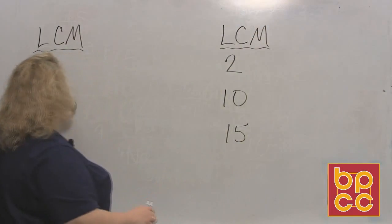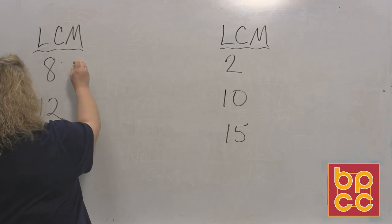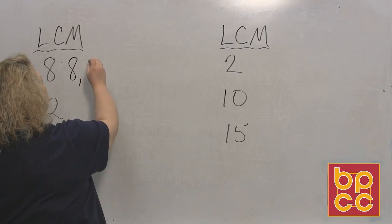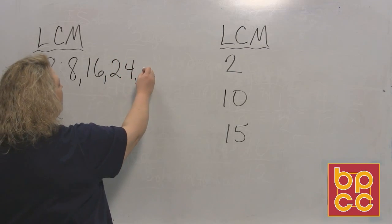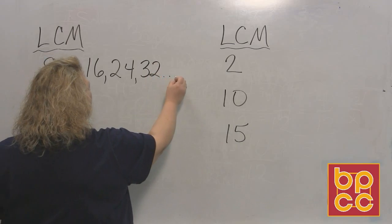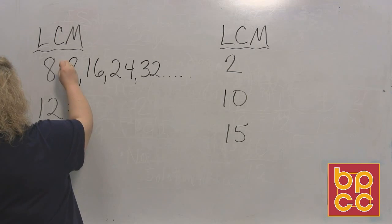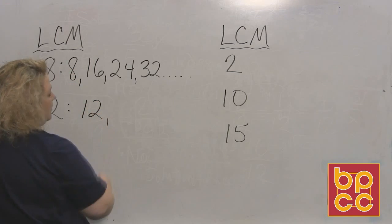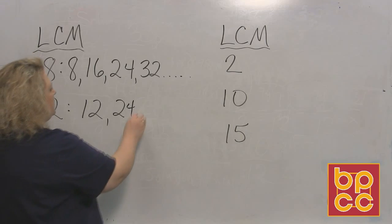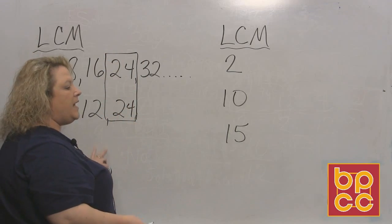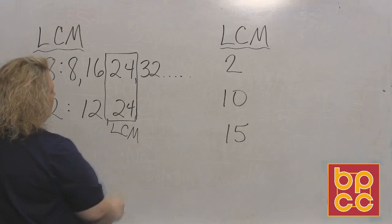Alright, I have 8 and 12. What we want to do is list the multiples of 8. So we say 8 times 1 is 8, 8 times 2 is 16, 8 times 3 is 24, 8 times 4 is 32, and you would keep listing if you needed to. Then we list the multiples of 12. We say 12 times 1 is 12, 12 times 2 is 24. And I really don't need to go anymore because I have just found the smallest number that both 8 and 12 will divide into evenly. So that is my least common multiple between 8 and 12.